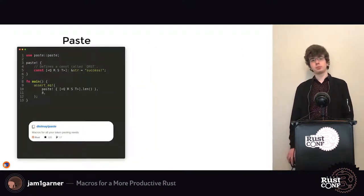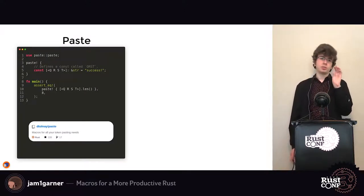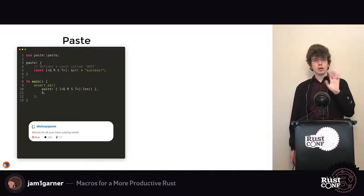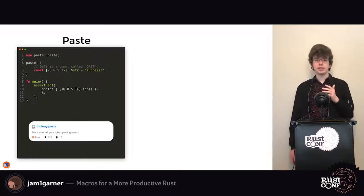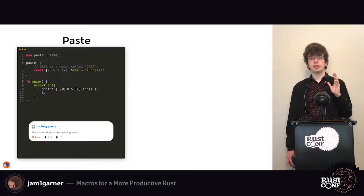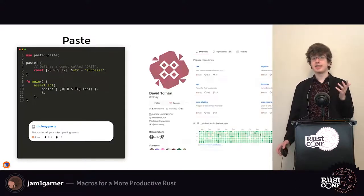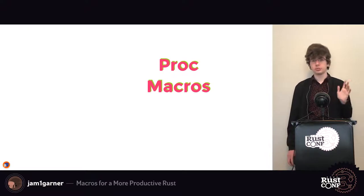One really useful crate when writing macro_rules macros is called paste. One limitation of macro_rules macros is that you can't create new identifiers, but paste lets you circumvent that by concatenating different identifiers to create a new one. In this example it takes the four identifiers q, r, s, and t and concatenates them to form `qrst`. David Tolney, who made paste, also has a GitHub site listing many other useful macro-related crates.